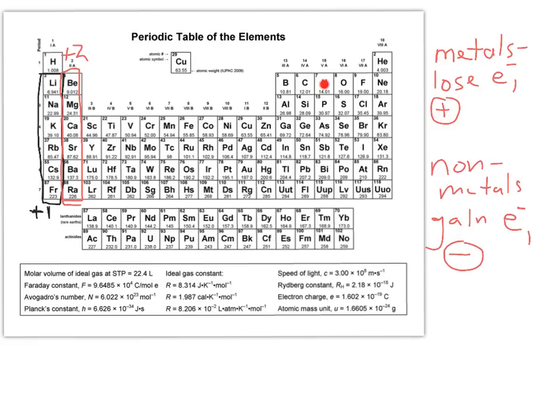That lowers their energy and makes them more stable. So nitrogen, for example, gains one, two, three electrons. A neutral nitrogen would have seven electrons. Nitride would gain three electrons to be like neon, electronically speaking.